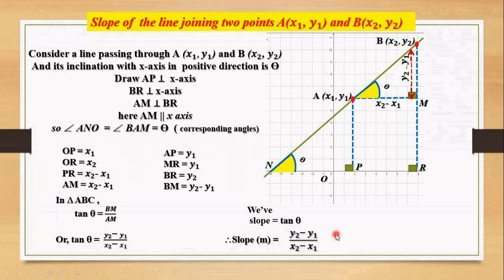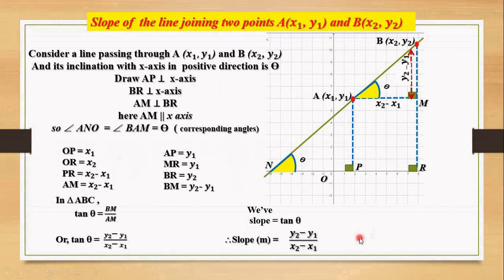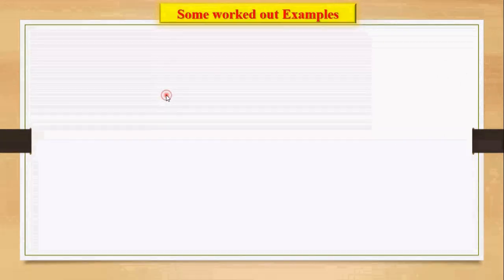This is the formula to calculate the slope of a straight line when two points on the line are given. We will now use this formula to solve various problems related to slope.